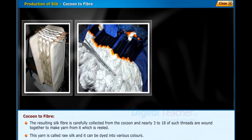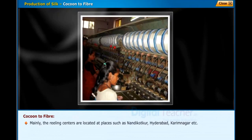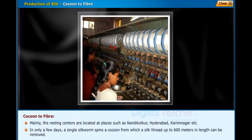This yarn is called raw silk and it can be dyed into various colors. Silk fibers are then spun into silk threads, which are woven into a variety of silk fabrics by weavers. The reeling centers are mainly located at places such as Nandikudkur, Hyderabad, and Karimnagar. In only a few days, a single silkworm spins a cocoon from which a silk thread up to 600 meters in length can be removed. However, it still takes about 2,500 cocoons to make half a kilogram of silk.